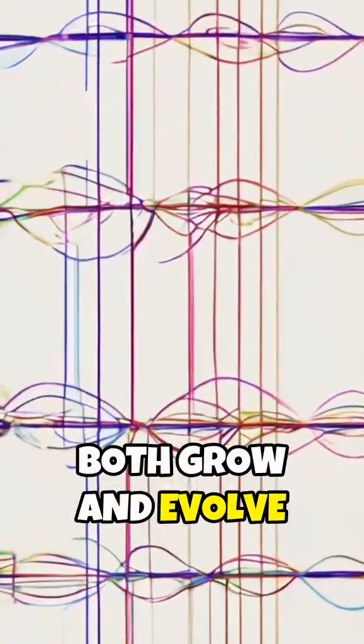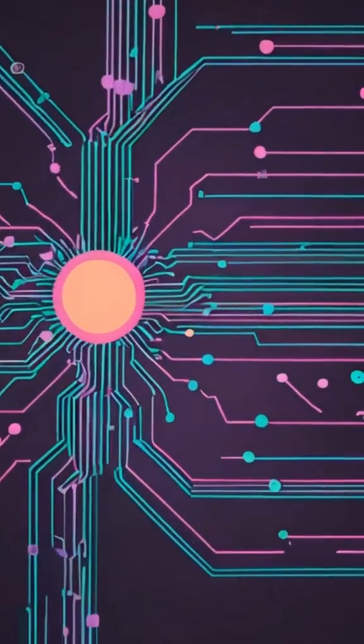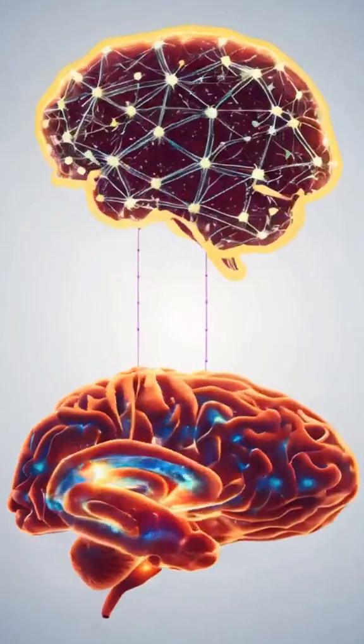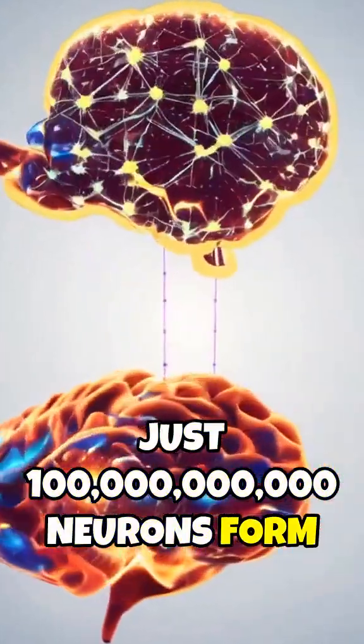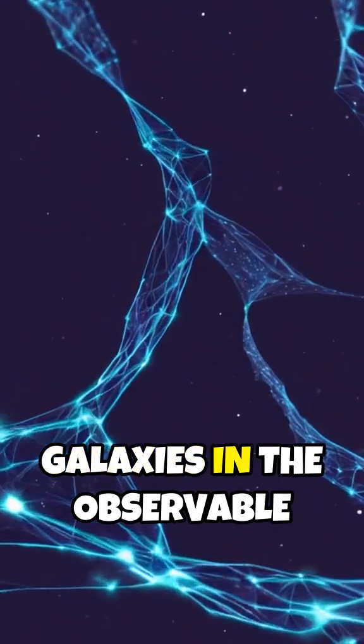Both grow and evolve based on complex network patterns. Even the way information travels through the universe mirrors neural connections. Just 100 billion neurons form the intricate webs of our minds, similar in number to galaxies in the observable universe.